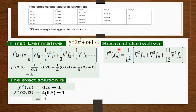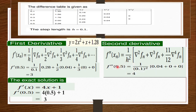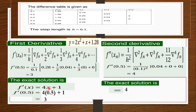For the second derivative formula, we take delta-squared equals 0.04, delta-cubed equals 0, and all higher differences are also zero. With h equals 0.1 and x equals 0.5, the result is 4. The exact solution confirms this: the second derivative of 2x² plus x plus 1.28 is simply 4, regardless of x.